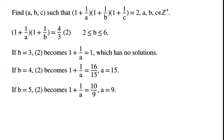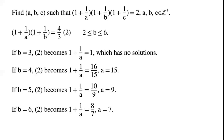If b = 5, equation 2 becomes 1 + 1/a = 10/9; by rearranging, a = 9. If b = 6, equation 2 becomes 1 + 1/a = 8/7; by rearranging, a = 7.